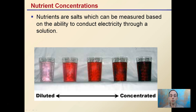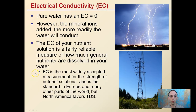Nutrient concentrations are basically what we're going to be keeping an eye on and monitoring. Our nutrients are salts, which can be measured based on their ability to conduct electricity through a solution — the higher the concentration, the more conductivity; the more diluted, the less conductivity.